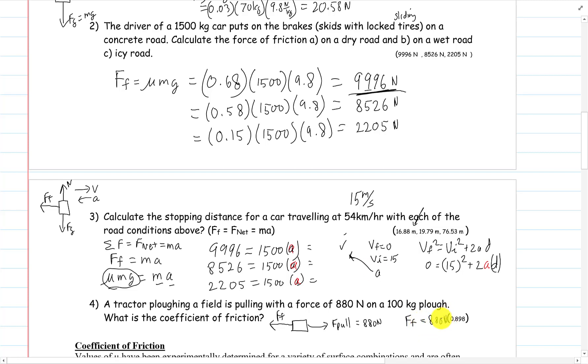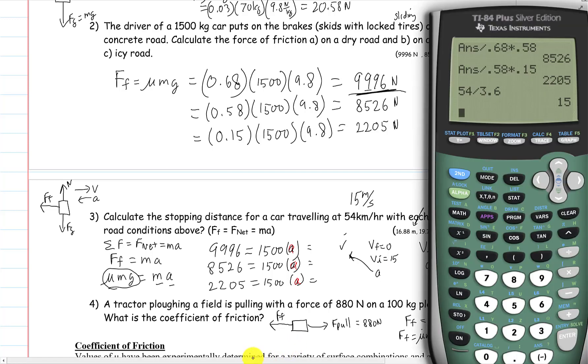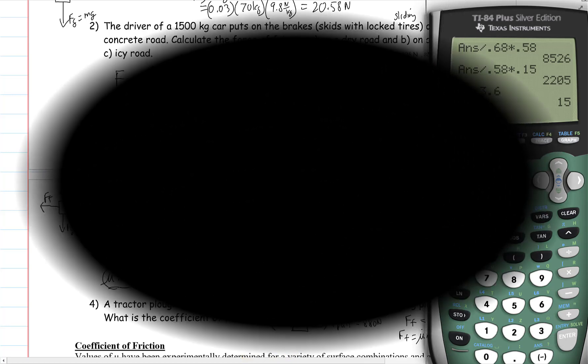Force of friction equals mu mg. Plugging in 9.8 and 100 kilograms, you can get mu, and you get 0.898.